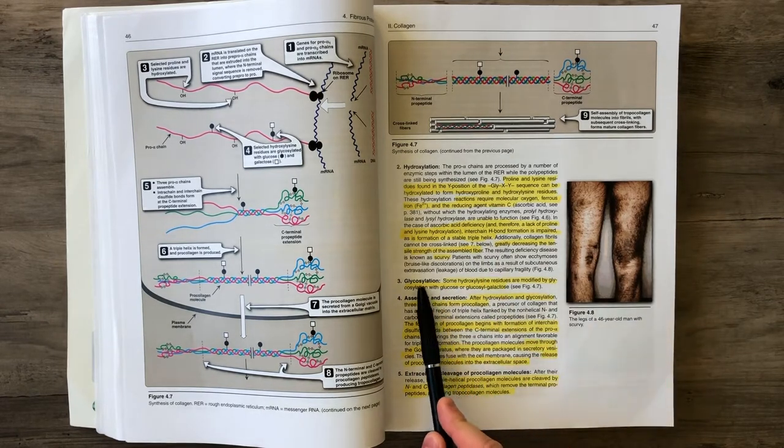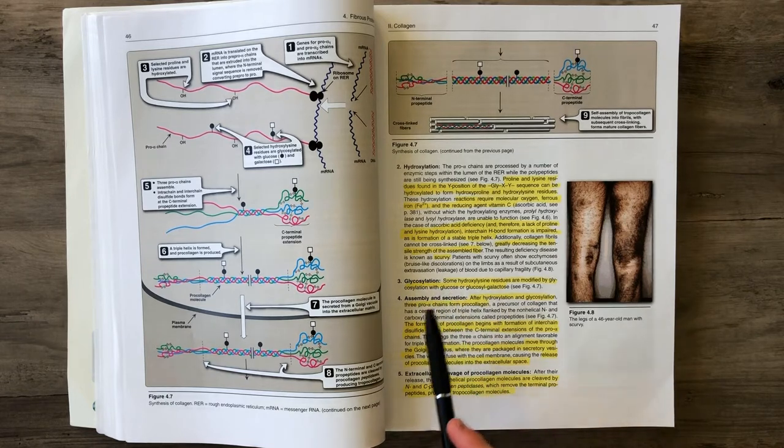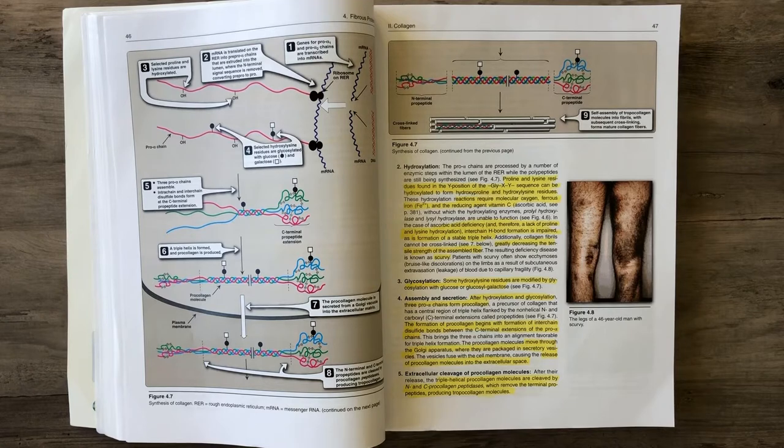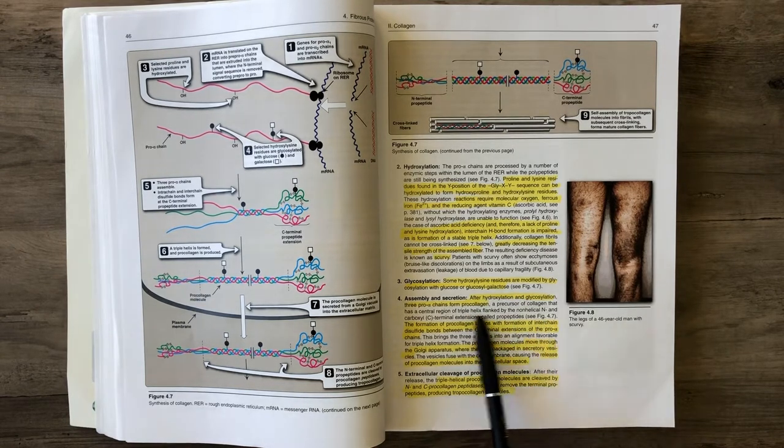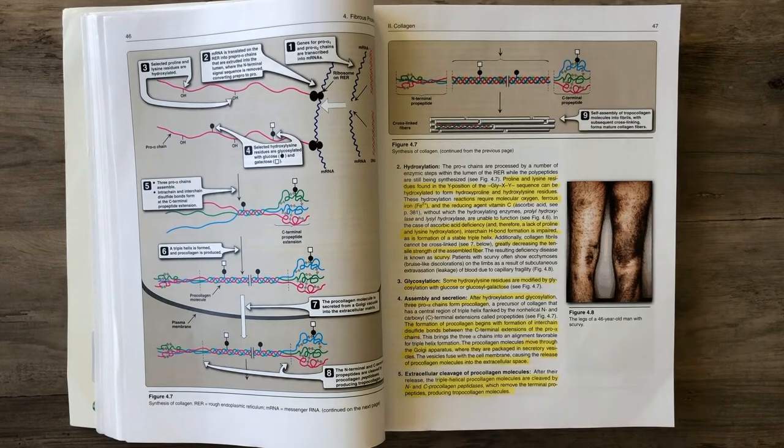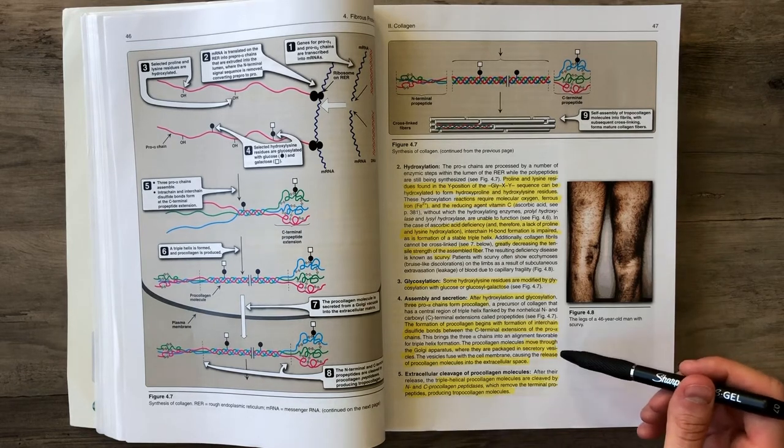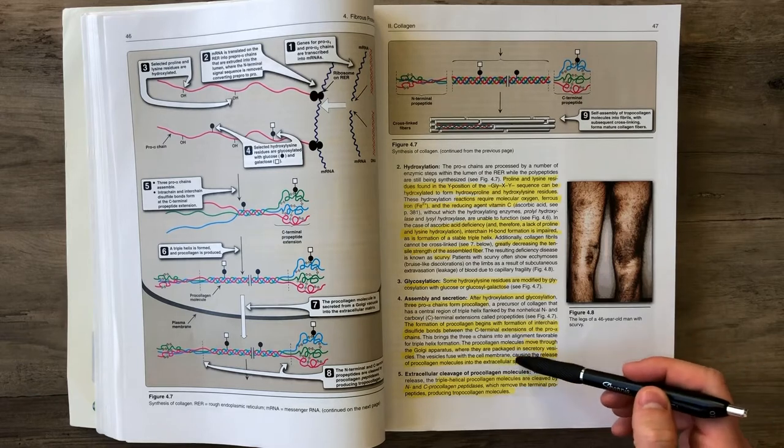Then we glycosylate our amino acids, adding glucose and galactose. They get assembled to be secreted from the fibroblast. The pro-alpha chains that have been hydroxylated and glycosylated form pro-collagen through disulfide bonds. The pro-collagen moves into the Golgi apparatus and then into secretory vessels to be released into the extracellular space.